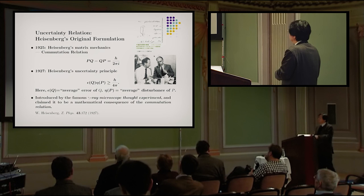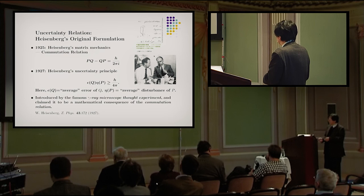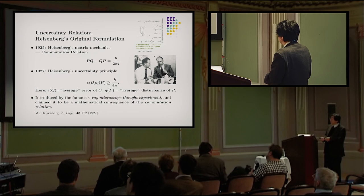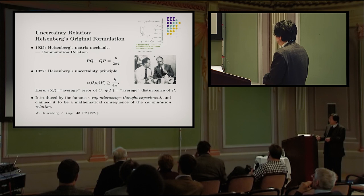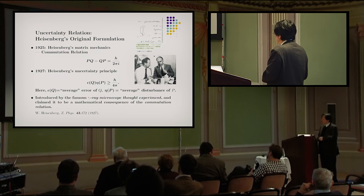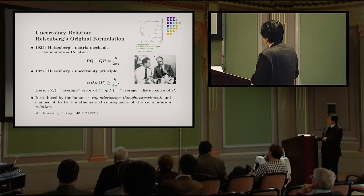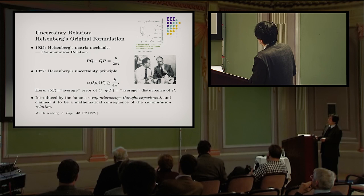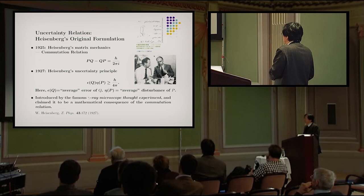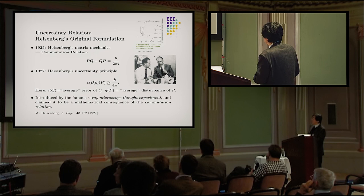The gamma ray microscope thought experiment is derived from the reciprocal relation between the resolution power of a microscope and the amount of change in momentum caused by the Compton recoil. If the wavelength is very short, resolution power is very good; however, the disturbance is large. If the wavelength is long, resolution power becomes bad; however, disturbance becomes small.